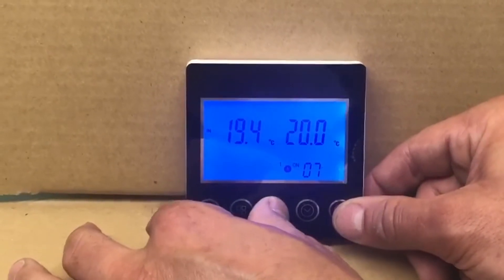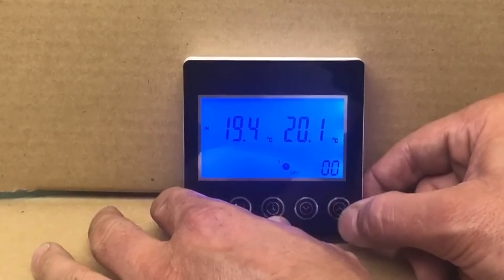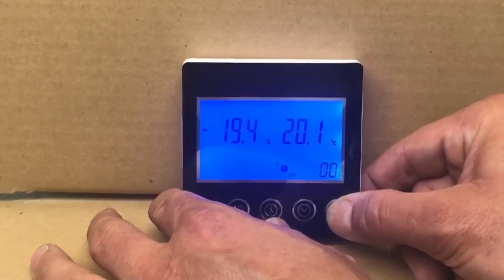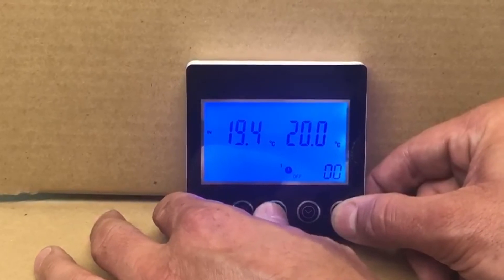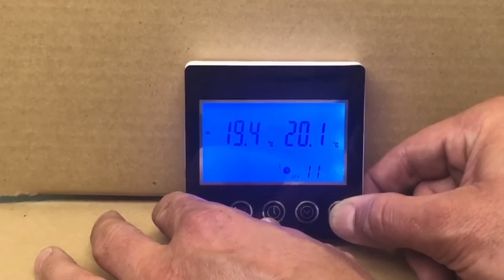We press the timer to skip through. Then we get the off time, and this is the first timer. We can set this to 10:30 or 11:30. That's the first schedule. Now we've got timer two.